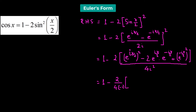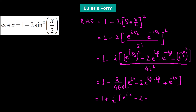So e^(ix/2) squared becomes e^(ix), and we have e^(ix) minus 2 times e^(ix/2 minus ix/2) plus e^(-ix). The negative from 4i² becomes positive, giving us 1 minus one half times e^(ix) minus 2 plus e^(-ix).